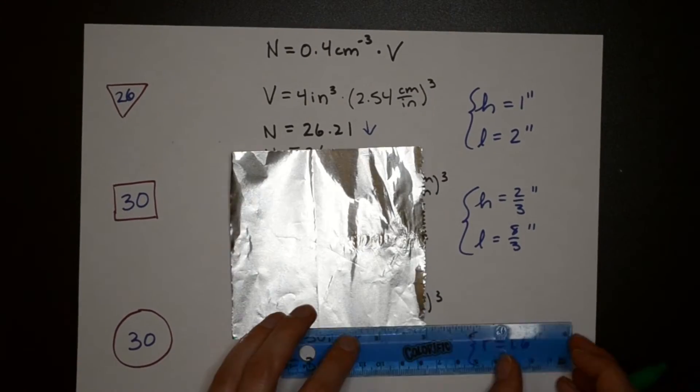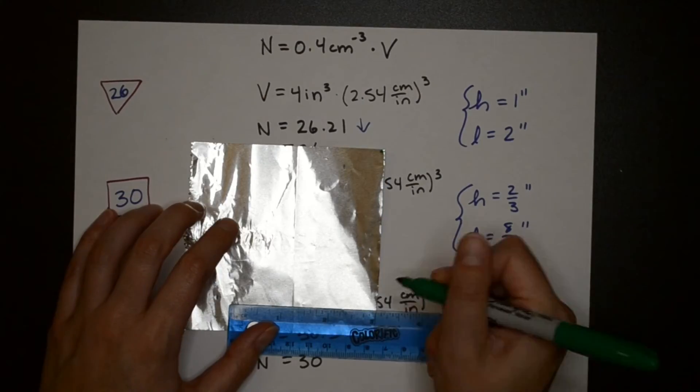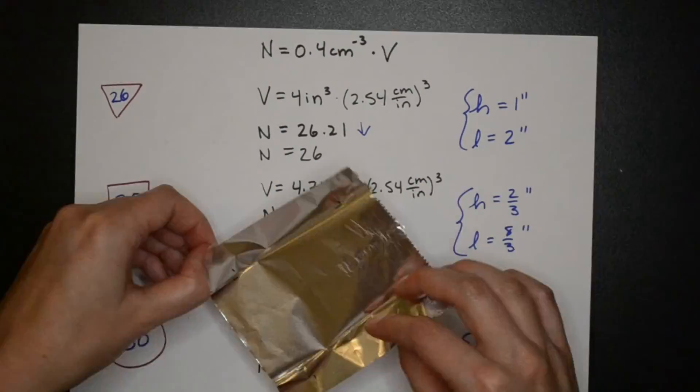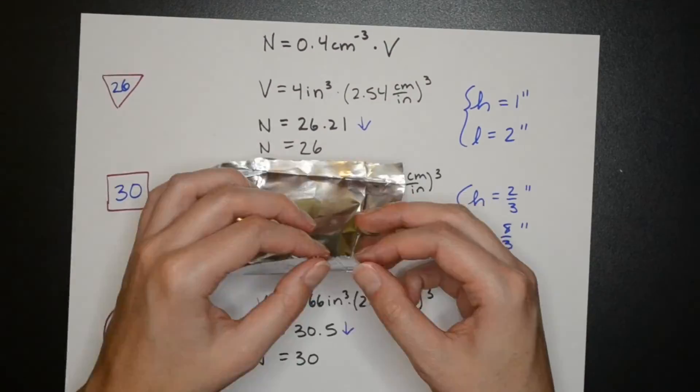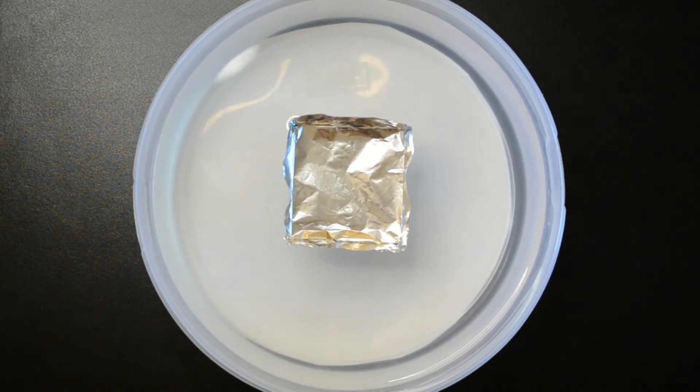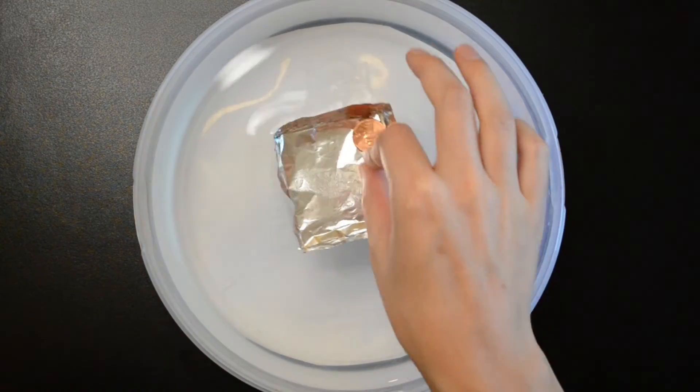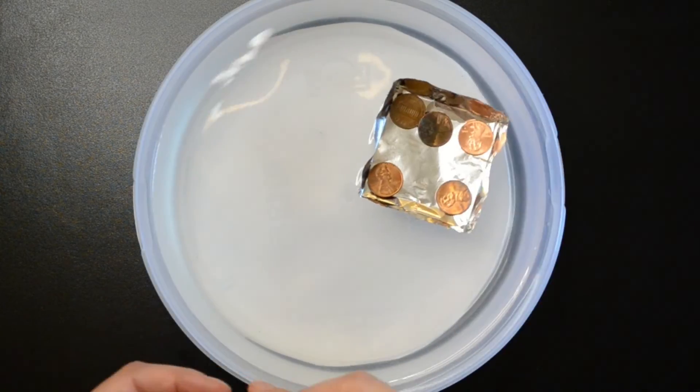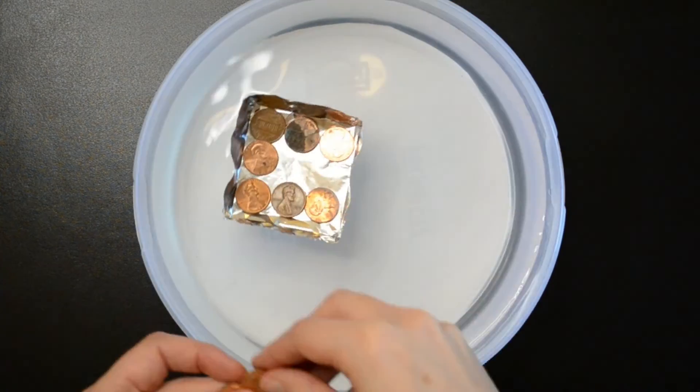For the cube loading the pennies evenly is important so the boat doesn't tilt to one side since that would decrease our submerged volume.